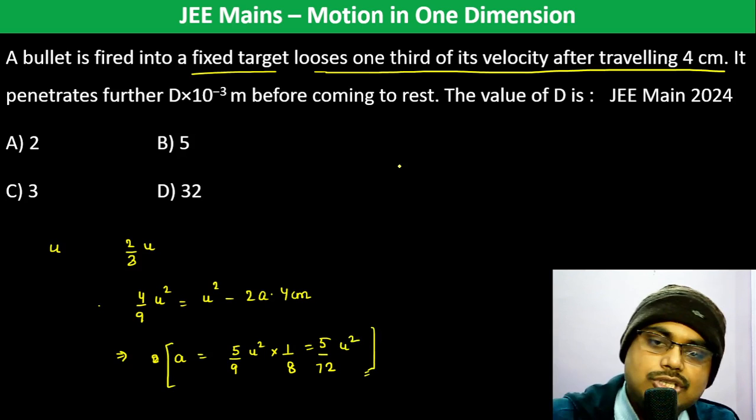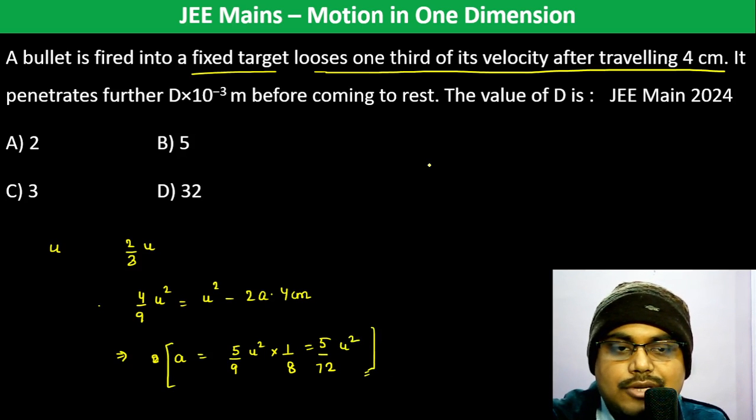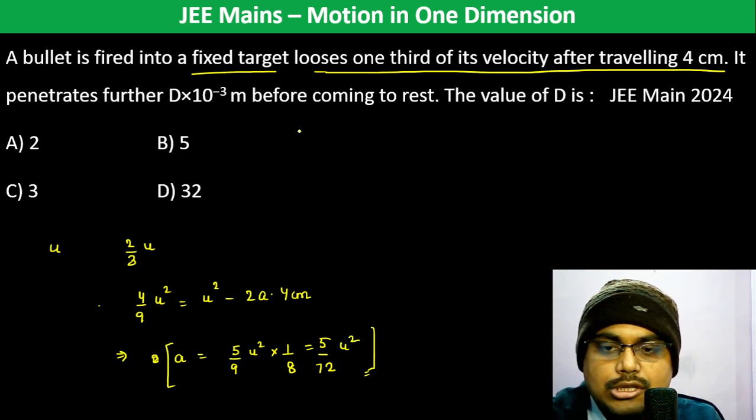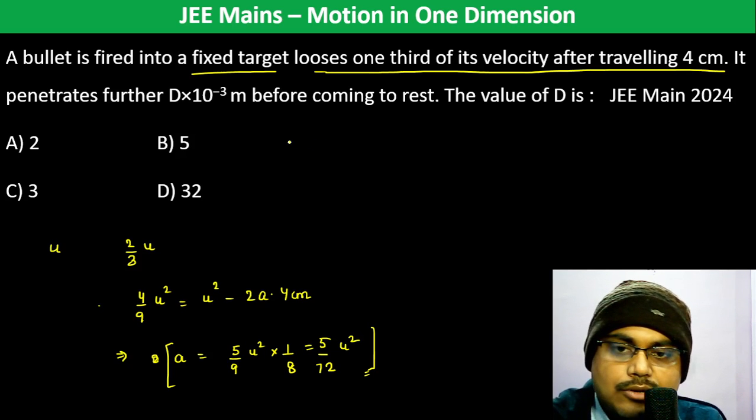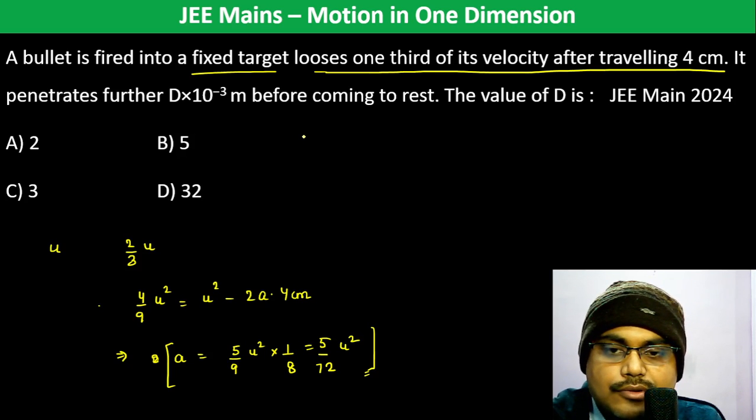It penetrates further D×10⁻³ meter before coming to rest. So the value of D is, now 0 is equal to (2/3 U)² whole square